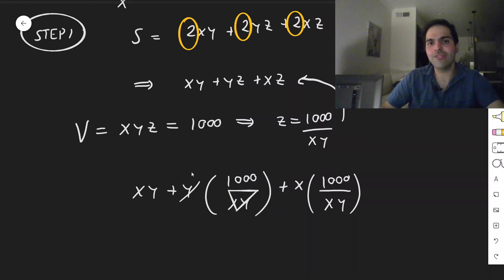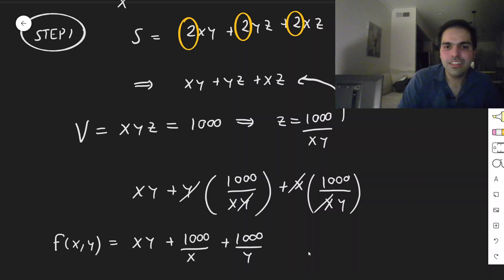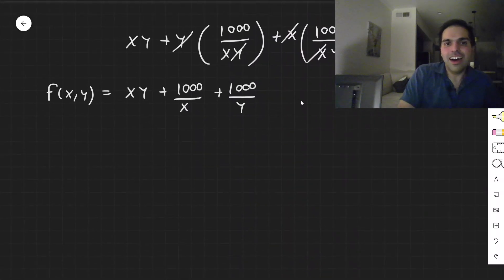Now the y's cancel and the x cancels. And finally, what you have is a function of two variables, which we call f of x, y. So f of x, y is just xy plus a thousand over x plus a thousand over y.